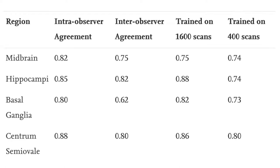Intra-class correlation coefficients were between 0.75 and 0.88. These values were higher than the inter-observer agreement of visual scoring, with ICCs between 0.62 and 0.80.